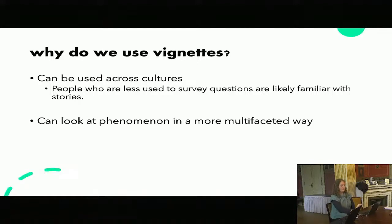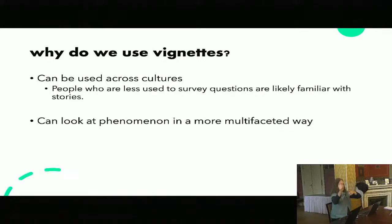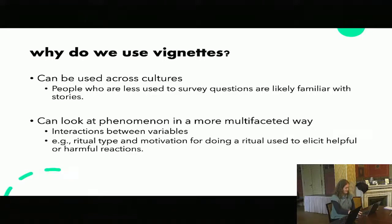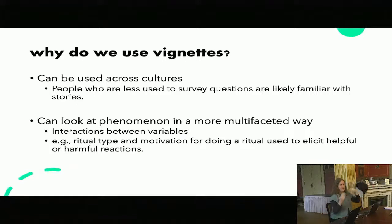Vignettes also allow us to look at types of situations in a multifaceted way. You can vary a bunch of different things systematically, so you can look at how things interact. A lot of the religion research or supernatural beliefs kind of talk about measuring little bits of this stuff and trying to put it all together. Vignettes do allow you, in a minimal sense, to put some of these ideas back together. You can look at how different aspects interact — for example, a type of ritual and a motivation for doing a ritual and how these things predict outcomes.